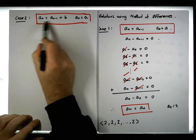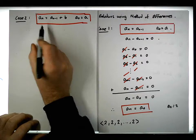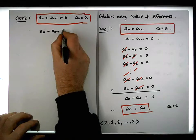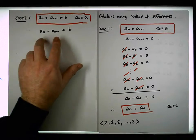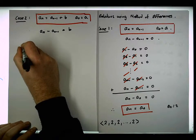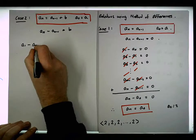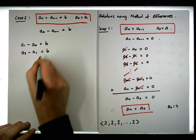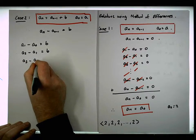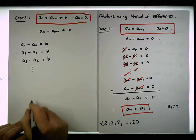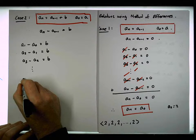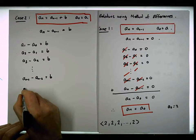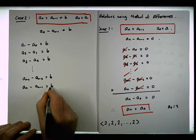Let's look at the recurrence and what the differences look like. From this recurrence, a_n minus a_{n-1} must equal the constant b. Iterating through: a_1 minus a_0 equals b; a_2 minus a_1 equals b; a_3 minus a_2 equals b; all the way down to a_{n-1} minus a_{n-2} equals b; and a_n minus a_{n-1} equals b.